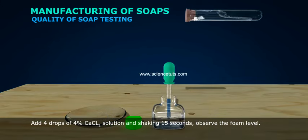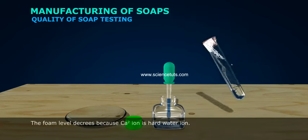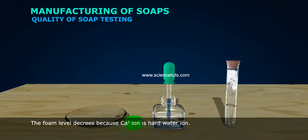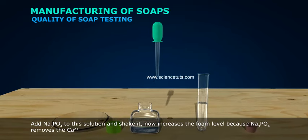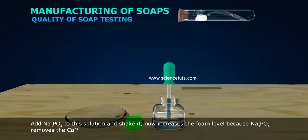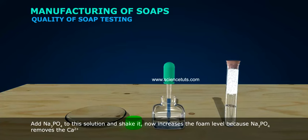Add 4 drops of 4% CaCl2 solution and shake for 15 seconds. Observe the foam level. The foam level decreases because Ca2+ ion is hard water ion. Add Na3PO4 to this solution and shake it. Now the foam level increases because Na3PO4 removes the Ca2+.